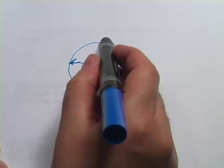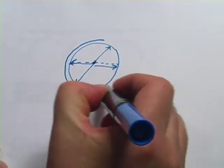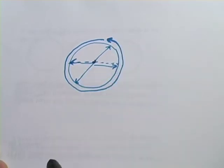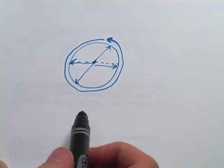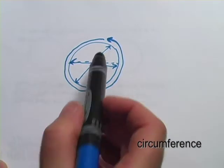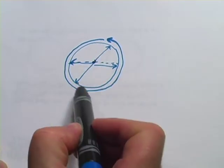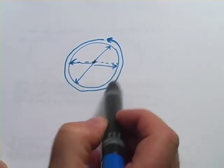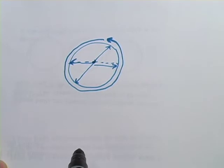And then the other thing you need to know is the word for the distance around the outside of the circle. That is called the circumference. So if this was a track, how far it would be starting from one point and getting back to where you started by walking around it.